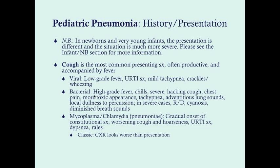Bacterial pneumonia, by contrast — these children appear much more ill. High-grade fever, chills, a more severe or hacking cough, and they may have chest pain. They have a more toxic appearance — they just look sicker. Tachypnea is present but may be worse. Adventitious lung sounds can be heard, and you get local dullness to percussion. Percuss the lungs — if you have a dull area, that could be where the bacterial pneumonia is affecting. Viral pneumonia tends to be more generalized on x-ray, whereas bacterial pneumonia tends to consolidate in one lobe, and that's where your dullness to percussion will be. In severe cases, you can have respiratory distress, cyanosis, and diminished breath sounds — an indication to intubate the child, as diminished breath sounds usually indicates respiratory fatigue.